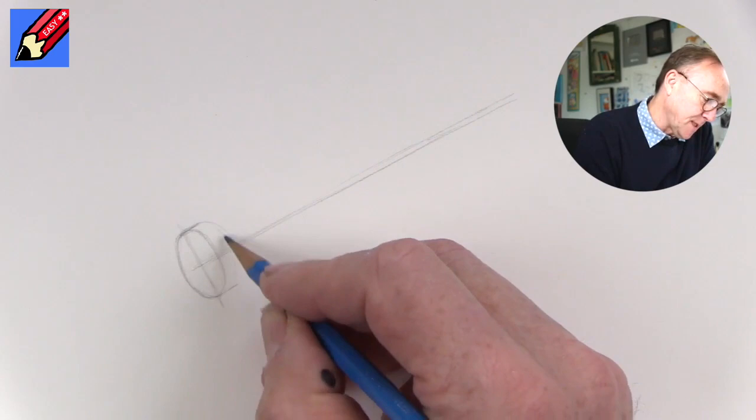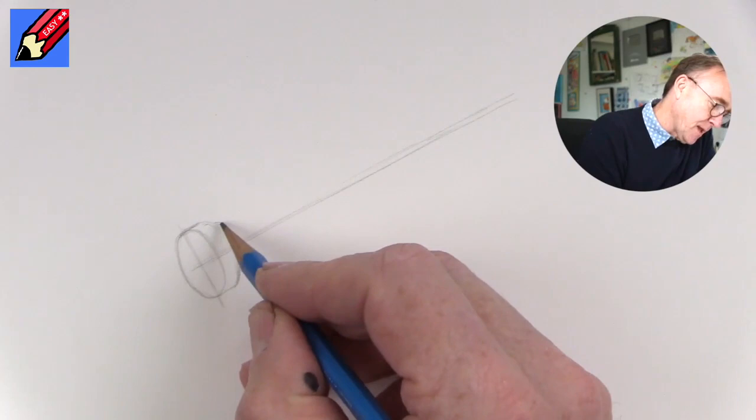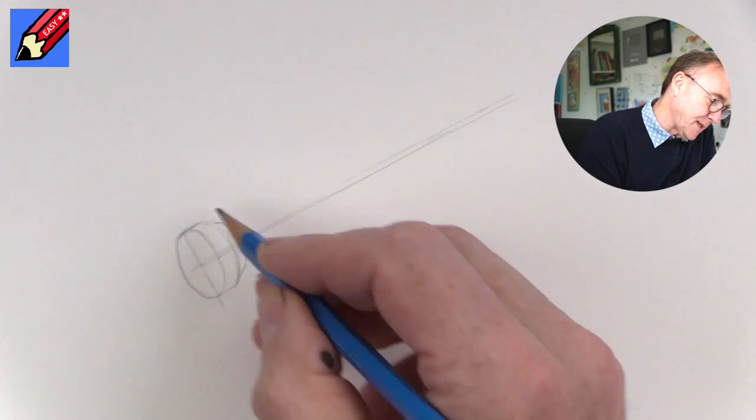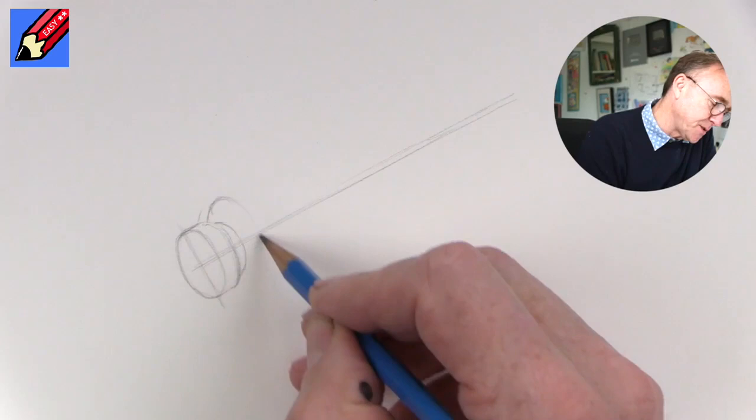And then underneath the cap you've got the bit where this part here actually screws onto the tube and we're just going to see like a fingernail there really, something like that. And then we have this shiny metal part around the top of the tube. So you've got a metal tube, plastic lid, and start just about there.